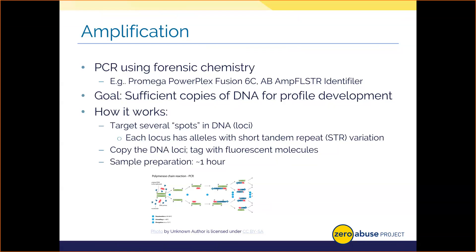We can detect what allele a person has based on the length of their short tandem repeats. We need to make many copies of DNA to ensure we can observe all the unique alleles and the overall profile for the evidentiary item. PCR is exponential — every cycle doubles the DNA being made. So if we start with two pieces of DNA, we get four, then eight, then sixteen, and so on. We analyze the uniqueness of a person's alleles for a given locus to generate statistics for the overall DNA profile for use in court.